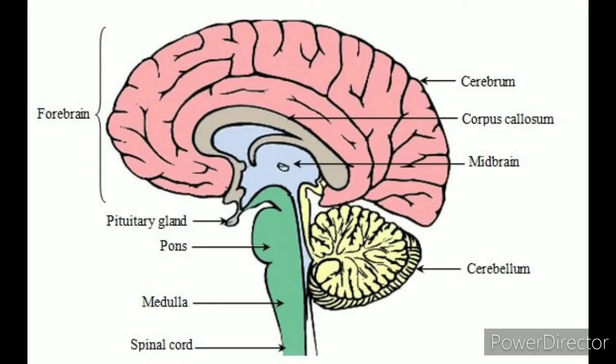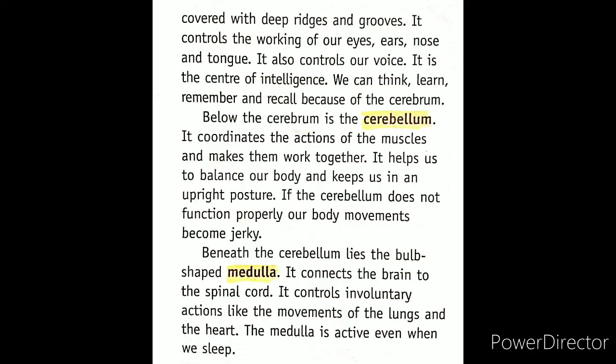Below the cerebellum lies the bulb-shaped medulla. It connects our brain to the spinal cord and controls involuntary actions, such as the movement of the lungs and heart. The medulla remains active even when we are sleeping.